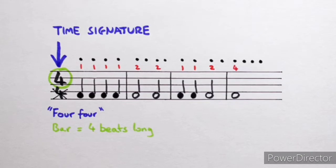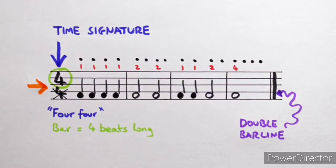And finally 1-2-3-4 bar line. Now because it's the end of the tune we need to add a special type of bar line to show that we're done. It looks like this and we call it a double bar line. There you have it. We've used the time signature to draw in some bar lines and make some bars.